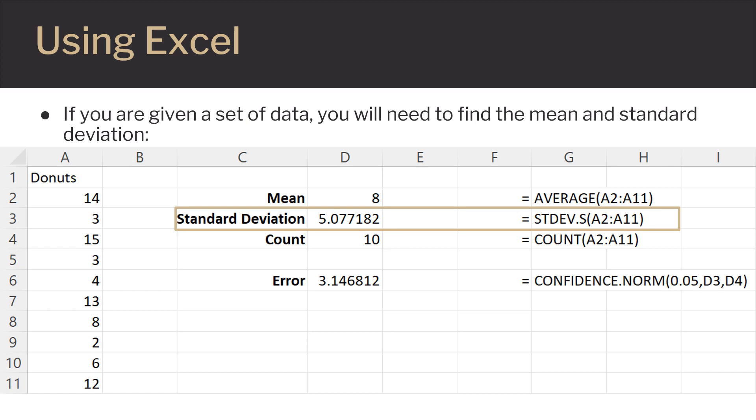For standard deviation, the Excel command is equals S-T-D-E-V dot S, open parentheses, select your data, and close the parentheses.